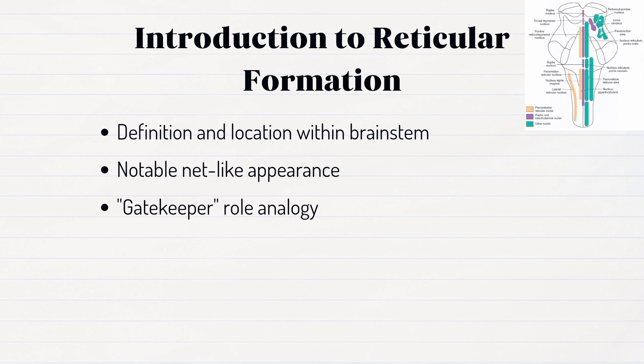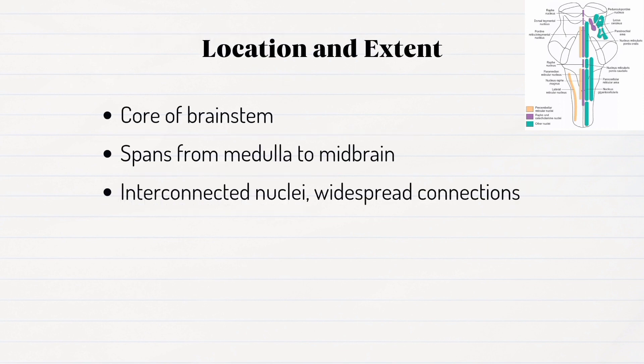The reticular formation is a fascinating complex of neural pathways and nuclei spanning the brainstem. Its name comes from its distinctive net-like appearance, and it is often linked to the brain's gatekeeper. As seen in this picture, the nuclei span the brainstem. Found in the core of the brainstem, the reticular formation stretches from the medulla to the midbrain.